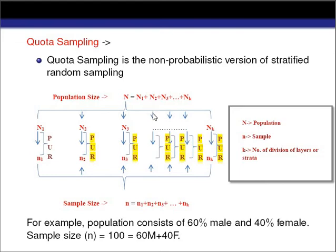If you understand stratified random sampling, it is very easy to understand quota sampling. Here also we divide the whole population into different subcategories called strata, and from each stratum we collect our sample. The total sample size equals the sum of samples collected from the different strata.